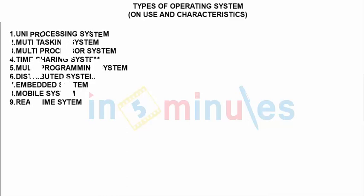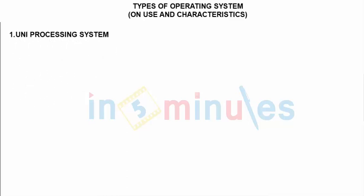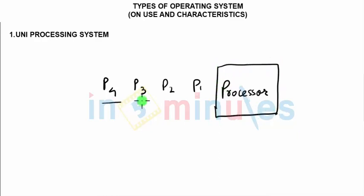To start with the first uniprocessing system. These are among the oldest type of operating system where all the processes would go one after another. All the tasks which we have would go to the processor. All the tasks one after another will go to the processor in a sequence.